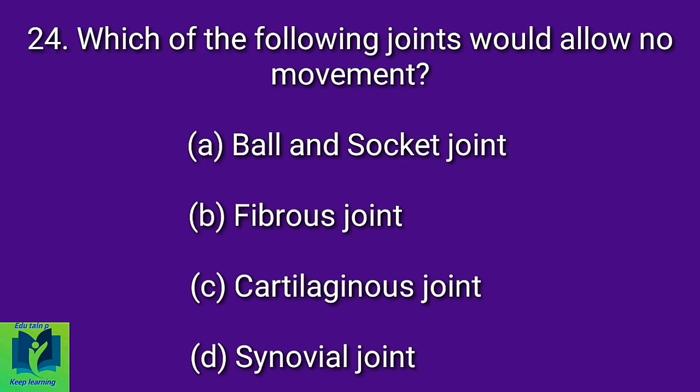Which of the following joints would allow no movement? Option A: Ball and socket joint. Option B: Fibrous joint. Option C: Cartilaginous joint. Option D: Synovial joint.